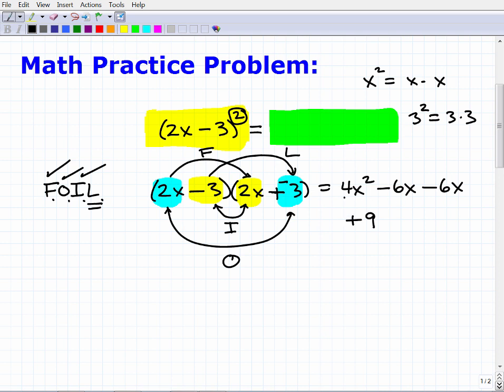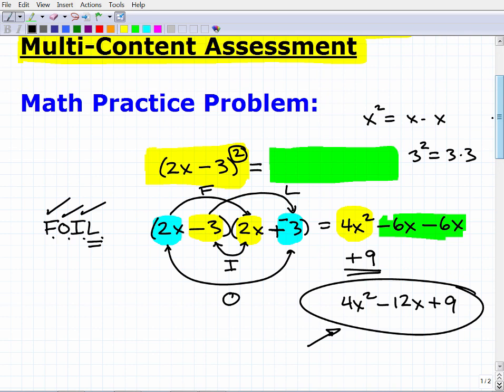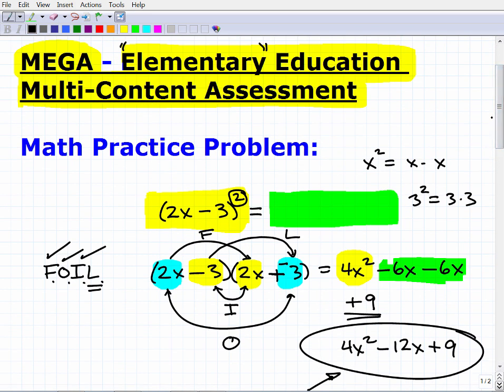When I square this binomial, I end up with a trinomial: 4x squared minus 12x plus 9. This is pretty basic algebra. These are skills you would definitely need to know for this particular level. Just because at the elementary level you may not be teaching this, you still need to know it.